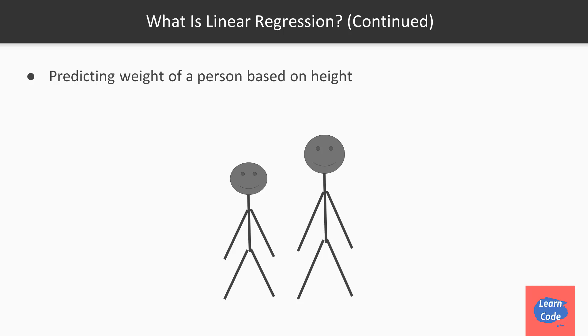Let's try to understand linear regression with the help of an example. Suppose you want to predict the weight of a person based on his height. So what you do is create a data set of different individual heights and the respective weights.